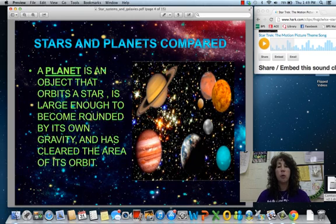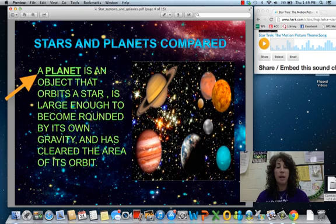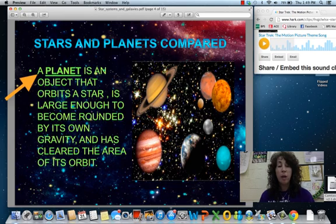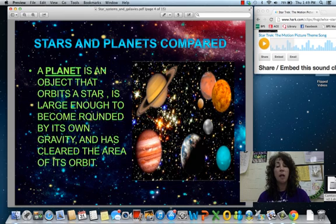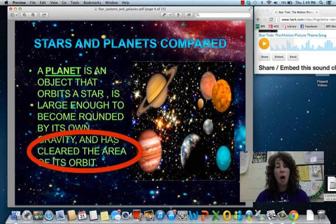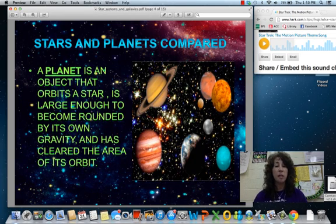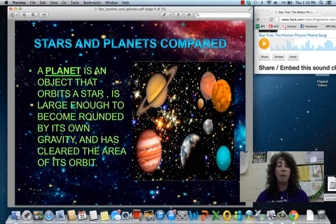So what is the difference between a star and a planet? A planet is just an object that orbits a star. Now, a couple key things with planets. They are large enough to become rounded by their own gravity. So they have enough mass that gravity can take over and create that circular shape. Also, another key thing is that planets have a cleared area to orbit. When we start talking about some of the smaller bodies in the solar system, this is going to be a key distinction between what a planet is versus other objects that are there.